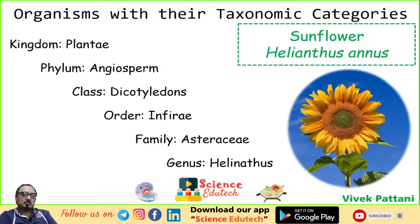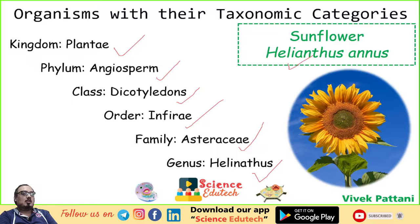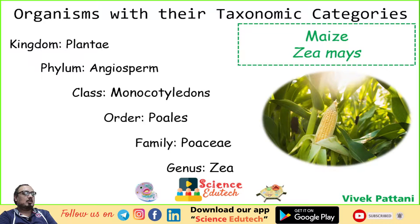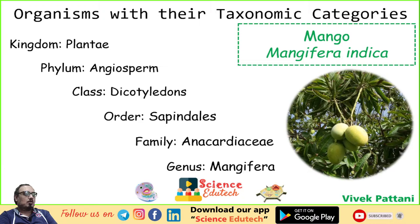Now let us discuss some examples from the plant kingdom. Kingdom: Plantae. Phylum: Angiosperm. Class: Dicotyledones. Order: Asterales. Family: Asteraceae. Genus: Helianthus. The scientific name for sunflower is Helianthus annuus. Next, maize. Kingdom: Plantae. Phylum: Angiosperm. Class: Monocotyledones. Order: Poales. Family: Poaceae. Genus: Zea. Scientific name: Zea mays.